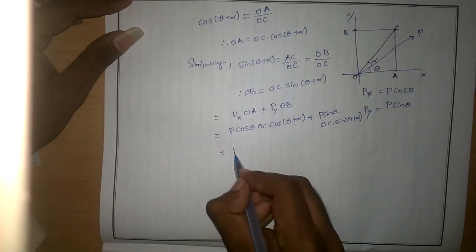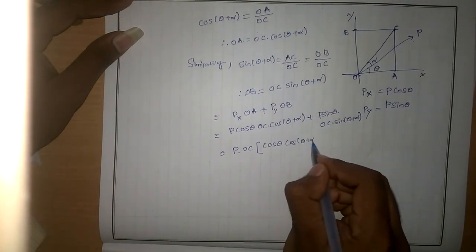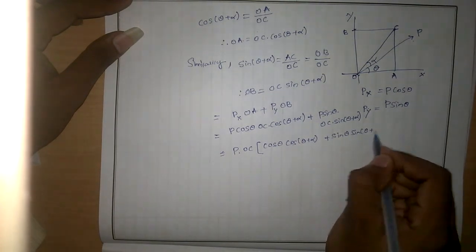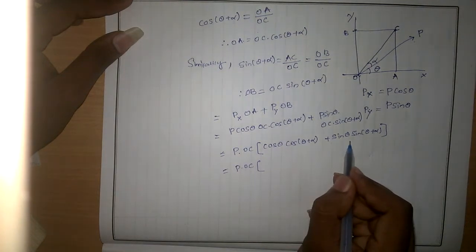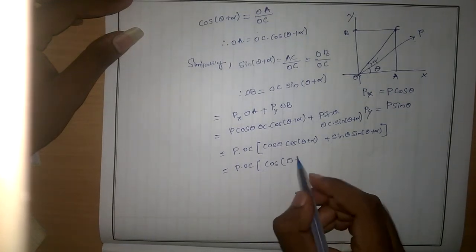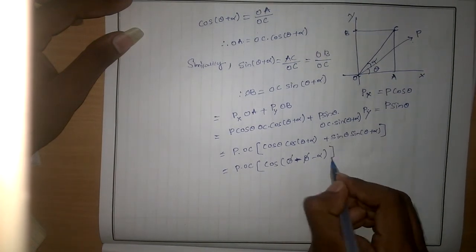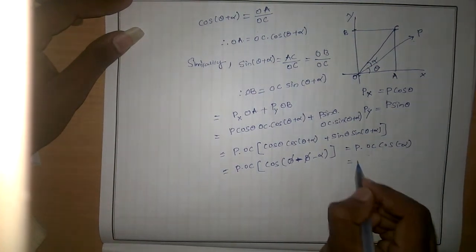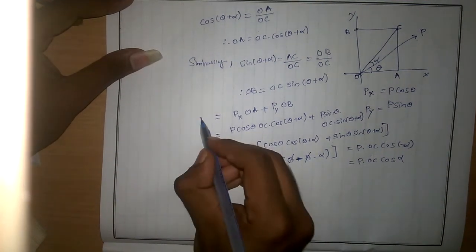Taking P · OC common, we get P · OC · [cos theta · cos(theta + alpha) + sin theta · sin(theta + alpha)]. Using the identity cos(A - B) = cos A · cos B + sin A · sin B, this becomes P · OC · cos(theta - (theta + alpha)) = P · OC · cos(-alpha). Since cos(-alpha) = cos alpha, the result is P · OC · cos alpha.